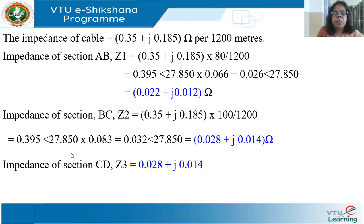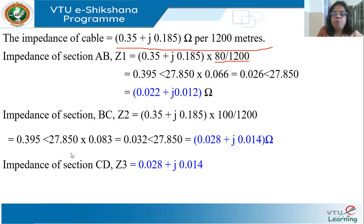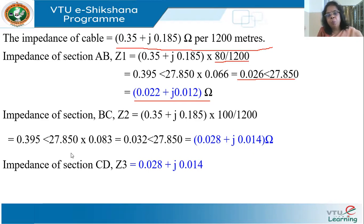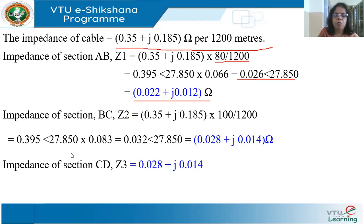The impedance of the cable is 0.35 + j0.185 ohms per 1200 meters. The first section AB is 80 meters, so I multiply by 80/1200. Section BC is 100 meters, so I multiply by 100/1200. Section CD is also 100 meters, so Z3 equals Z2. I represent each impedance in both polar and rectangular form so I can pick whichever is needed — polar for multiplication, rectangular for addition.